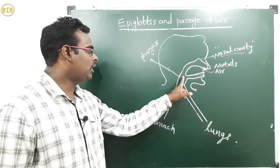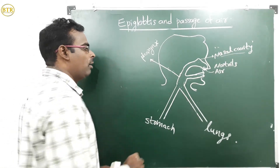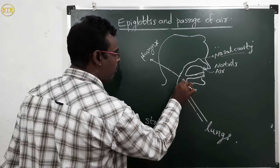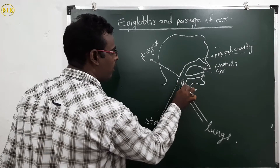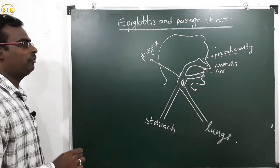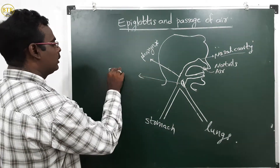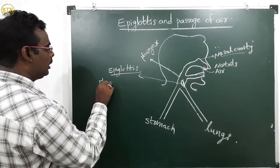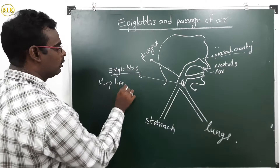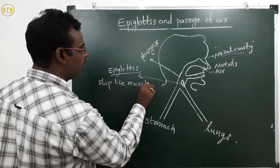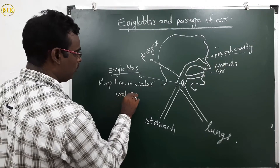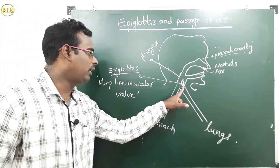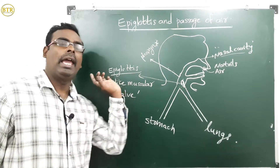At the region of the pharynx, a muscular flap-like valve is present. This structure is called the epiglottis. Epiglottis is a flap-like muscular valve present at the place of the pharynx.